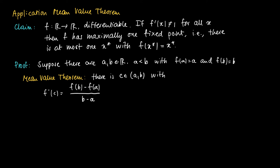But since f(b) equals b and f(a) equals a, this is the same as saying that this equals (b - a) divided by (b - a). So this of course equals one. So we arrive at a contradiction since we assume that the derivative is never equal to one. So it cannot be one in c.